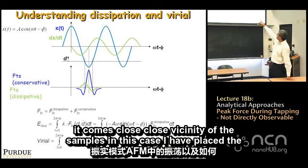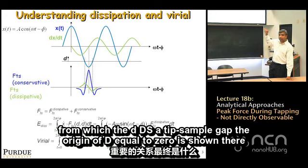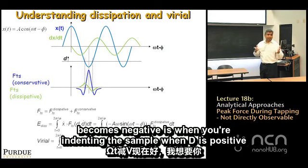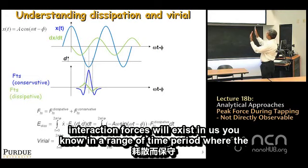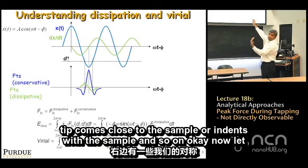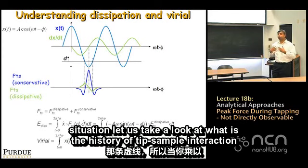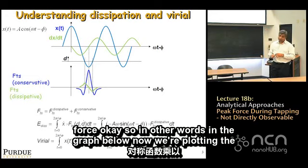The sample is placed at the solid horizontal line representing d = 0, where d is the tip-sample gap. When d becomes negative, the tip is indenting the sample; when d is positive, the tip is above the sample. Interaction forces exist only during the brief period when the tip comes close to or indents the sample.